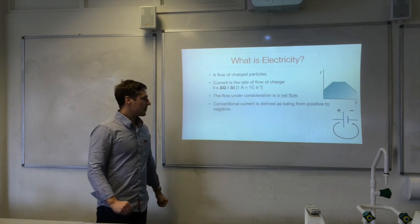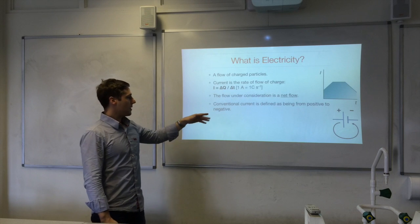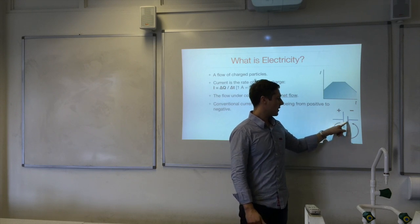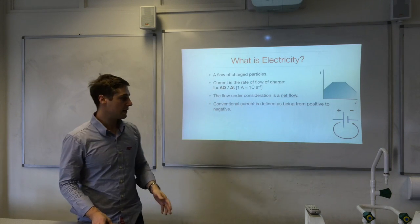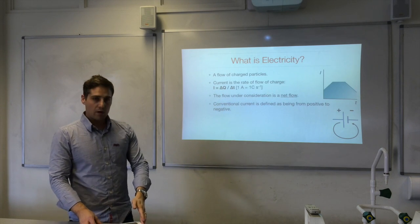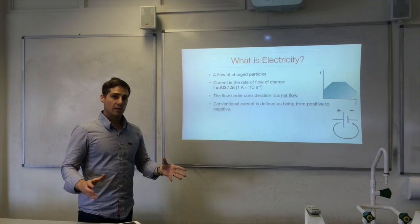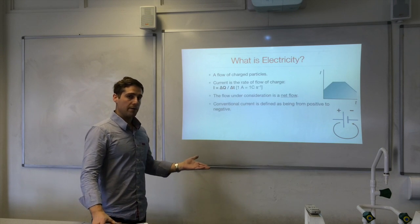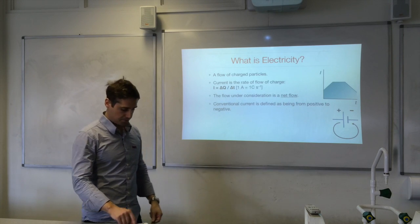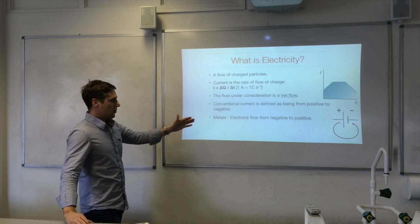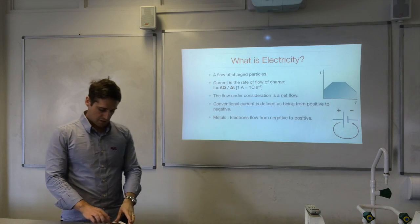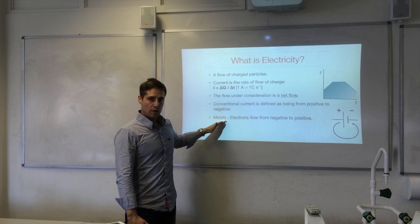Electrons are not static. Conventional current is defined as being from positive to negative. I have a cell with a positive terminal on the long thin side and the short thick side as the negative terminal, and conventional current flows from positive to negative. Conventional current was defined before it was known that electrons are negatively charged and are the primary charge carriers in metals. So electrons actually flow from the negative terminal to the positive terminal — you should appreciate the difference between conventional current and electron flow.